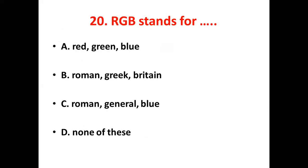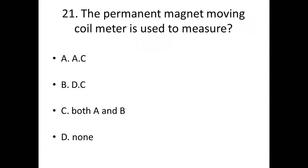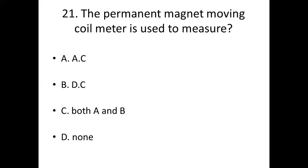21st bit: The permanent magnet moving coil meter is used to measure dash. Option A: AC. Option B: DC. Option C: Both A and B. Option D: None of this. Answer — Option B: DC.